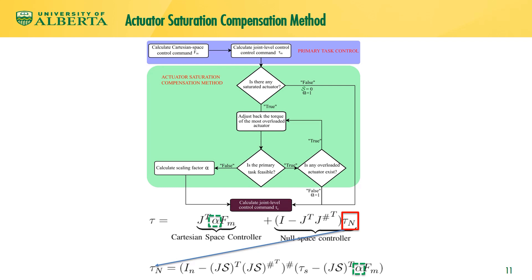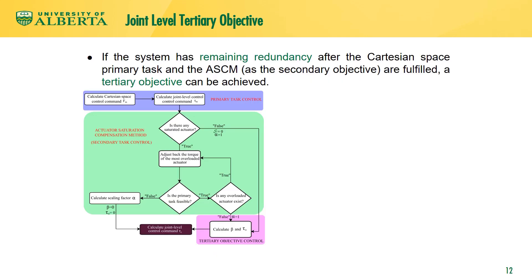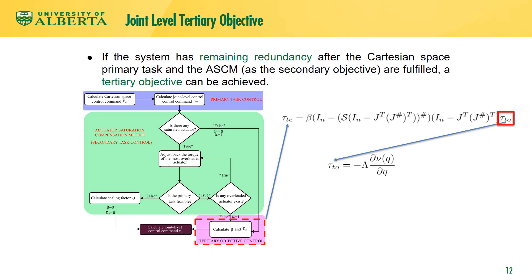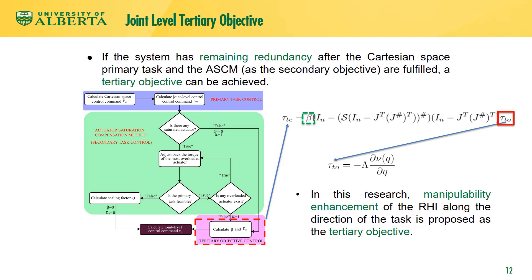Alpha equals 1 unless the primary task is not feasible for the redundant haptic interface. After the actuator saturation compensation method resolves joint torque overload, a tertiary objective can be accommodated within the residual torque capacity of the redundant haptic interface. The null space controller for the tertiary objective works in parallel with the primary task controller and the actuator saturation compensation method. The tertiary objective has lower priority and must be satisfied in the null space of the actuator saturation compensation method. A scaling factor β between 0 and 1 is introduced to preserve joint bounds; if no kinematic redundancies remain, β equals 0. In this research, manipulability enhancement along the direction of the task is proposed as the tertiary objective.